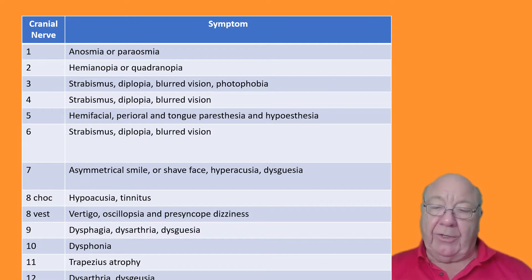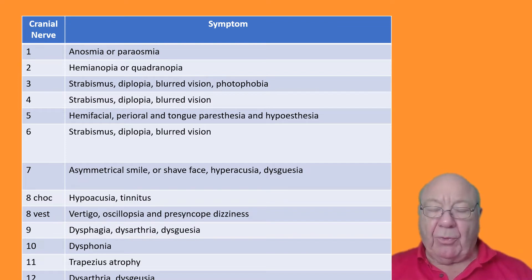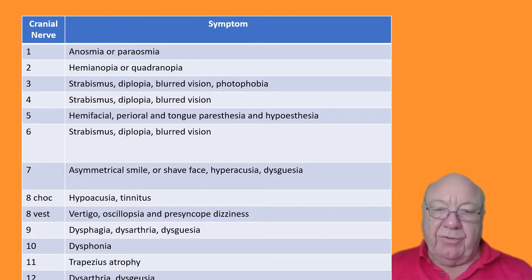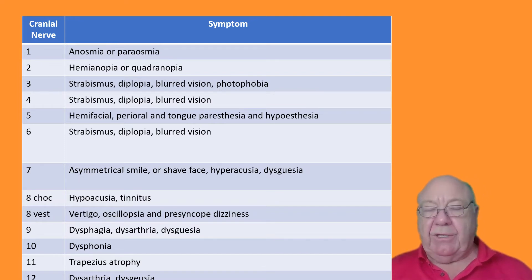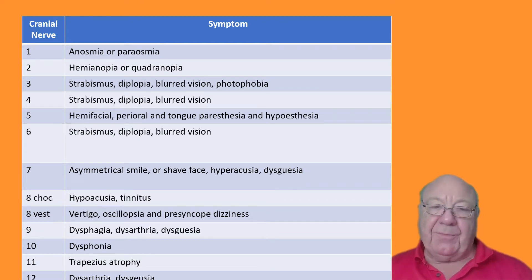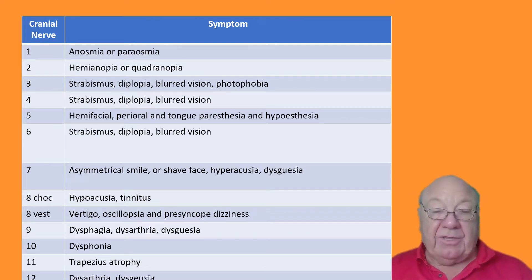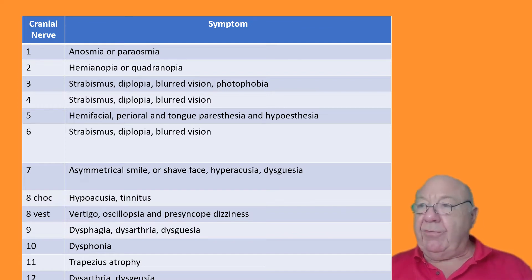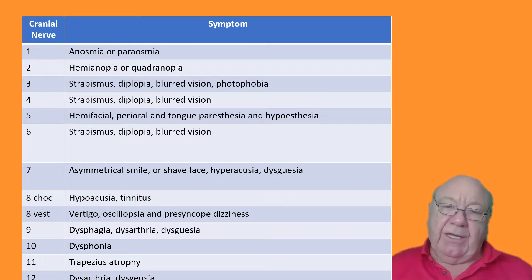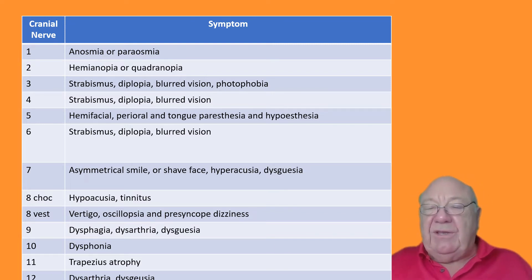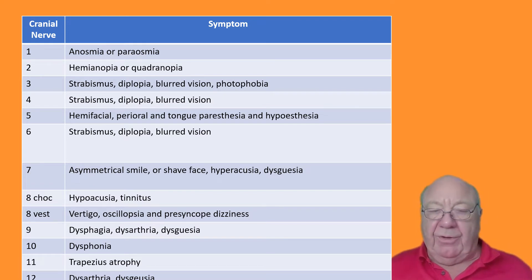Symptoms are where you always start with the neurological exam, and these are a bit more multiple than they are in the spine. Cranial nerve one: anosmia or parosmia. Anosmia — where you can't smell at all — is unusual, particularly if it's a unilateral problem, because they're still smelling through the other side and may not know they have it. Parosmia is a deformed smell — the equivalent of paresthesia or tinnitus with hearing loss. It's a replacement sensation for denervation, and it can be smelled whether unilateral or bilateral.